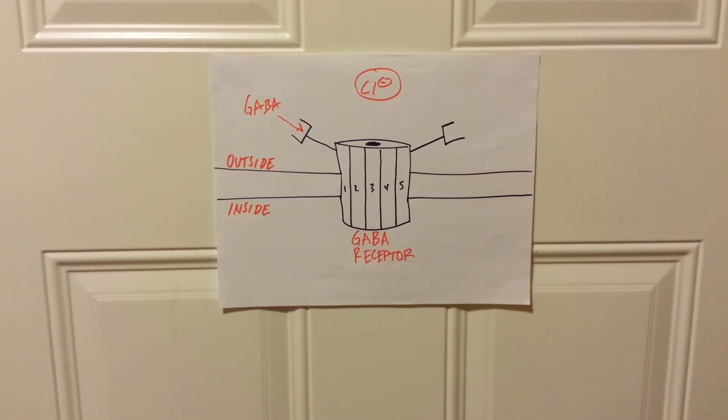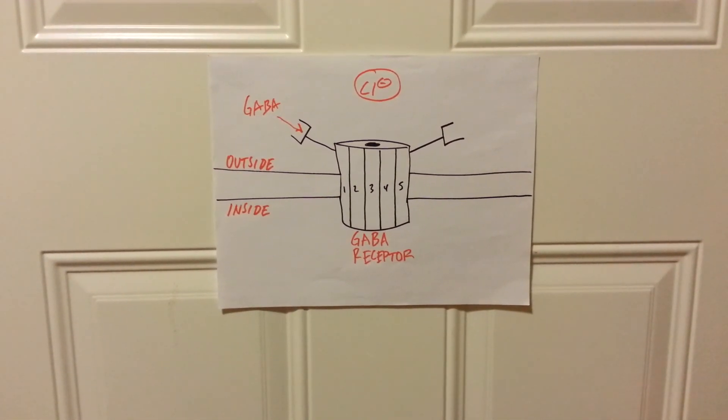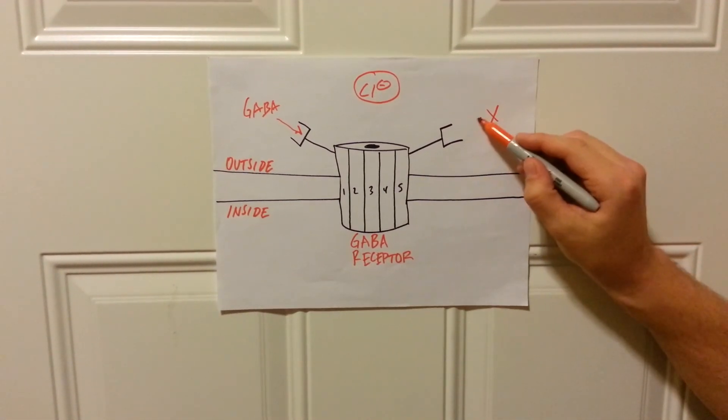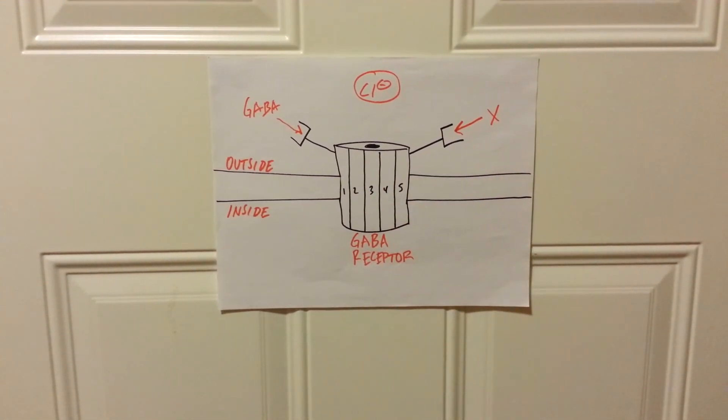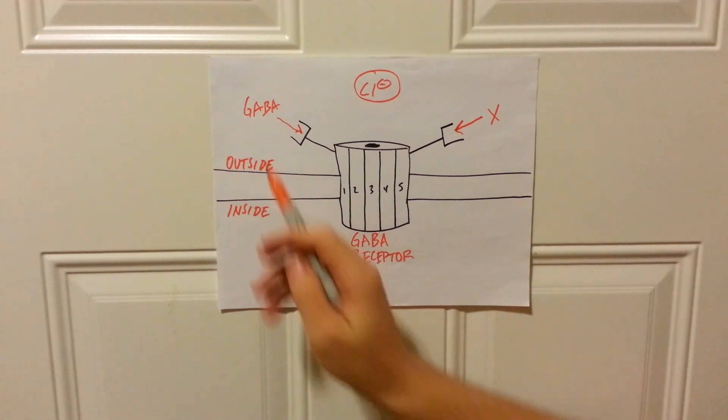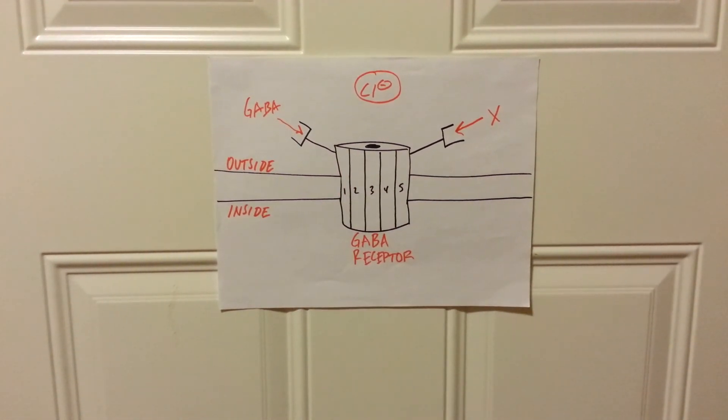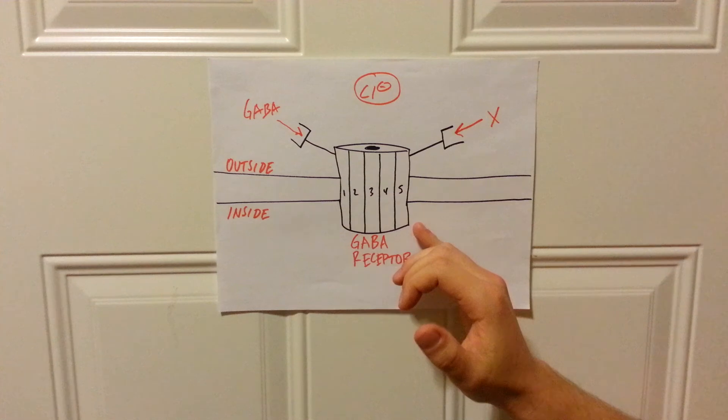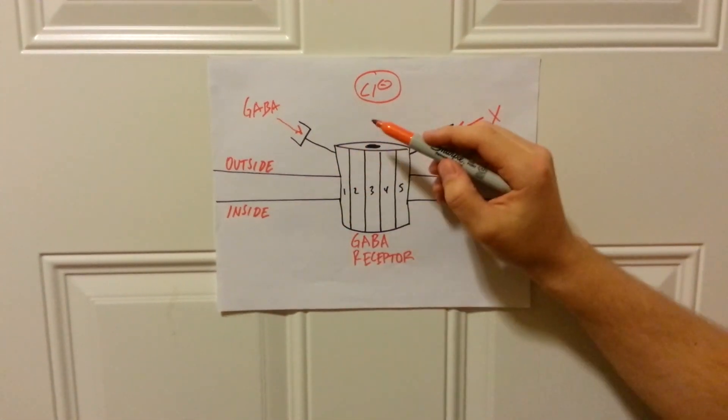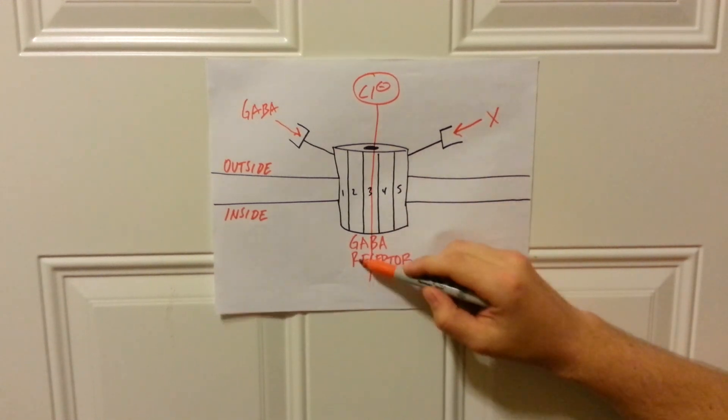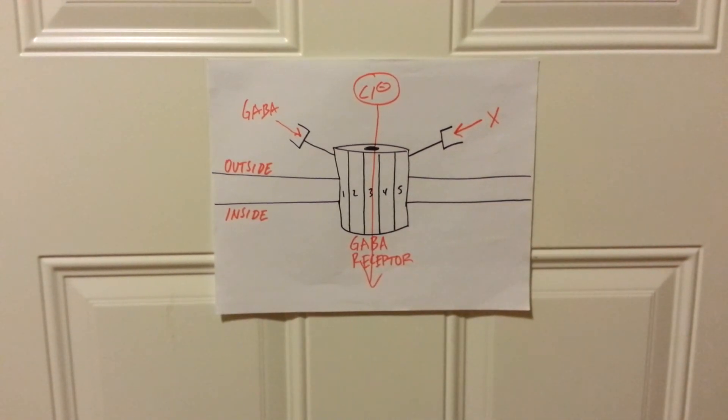How Xanax works is it's a positive allosteric modulator, which means that when it binds, this receptor complex undergoes a conformational change whereby GABA binds much more often and much more strongly to this receptor complex. And once GABA does bind, chloride ions flow inside the cell, thus hyperpolarizing the membrane.